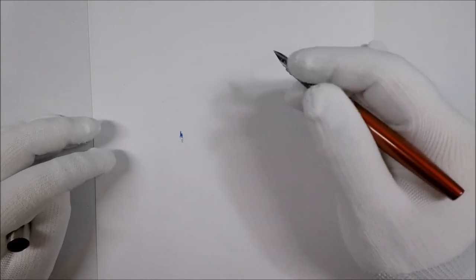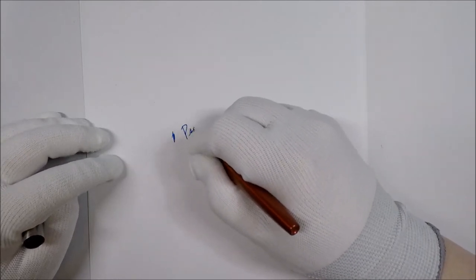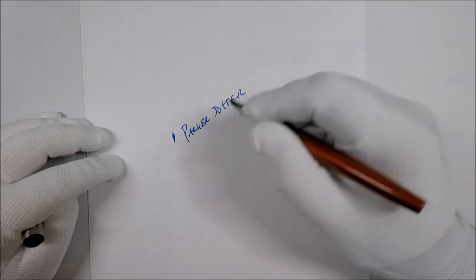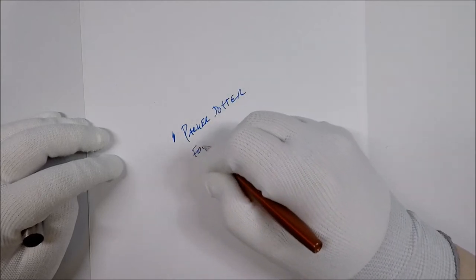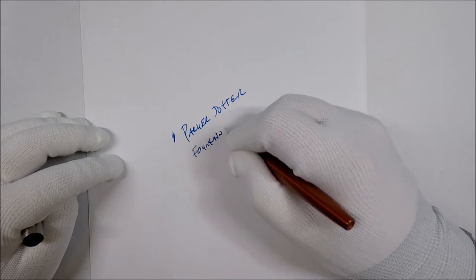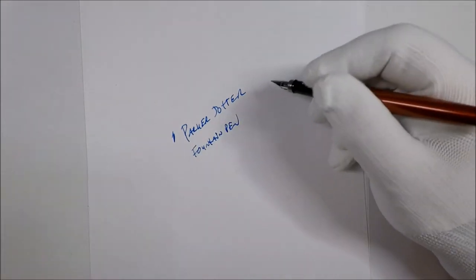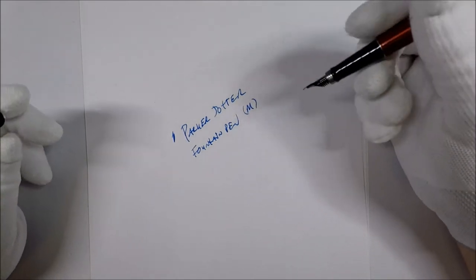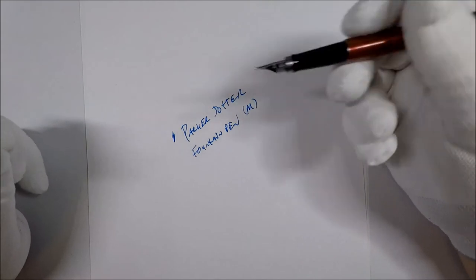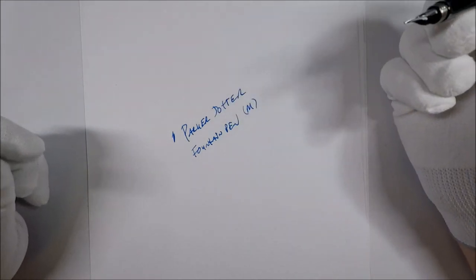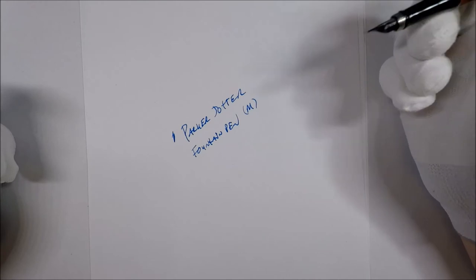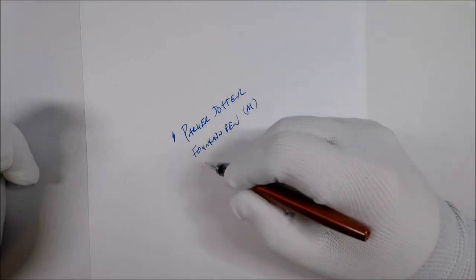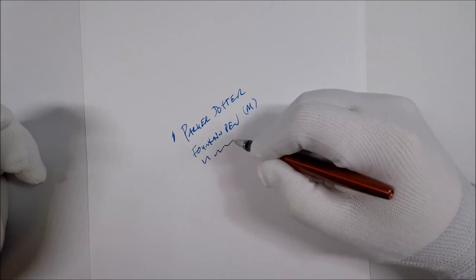Ah here we go. Alright so this is a Parker Jotter fountain pen and it's a medium point. It doesn't write too bad. I mean it seems like it's a teeny bit wet I guess would be the term. There's a lot of ink flow and maybe it's just the ink.